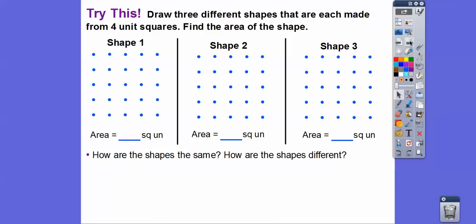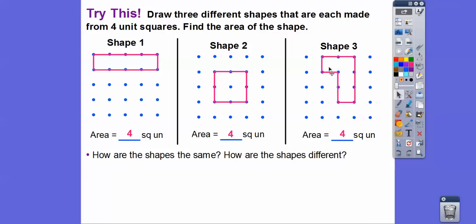Let's draw three different shapes that are each made from four square units and then find the area of each shape. Well, if they're going to have four square units, then all the areas are going to be four square units. Here's one: one square, two square, three square, four square — that's one shape with four squares. What about making a big square out of four squares? One square, two square, three square, four square. How about a little upside-down L shape? One square, two square, three square, four square.